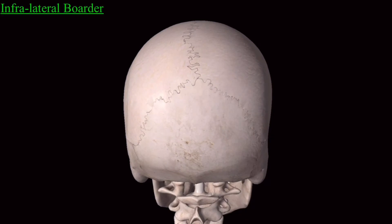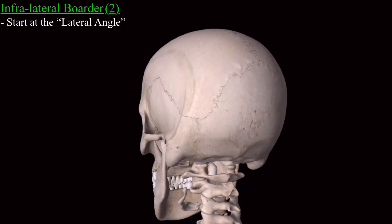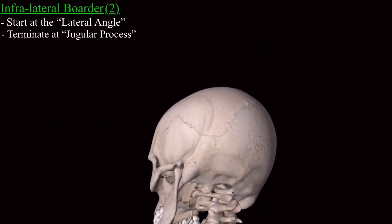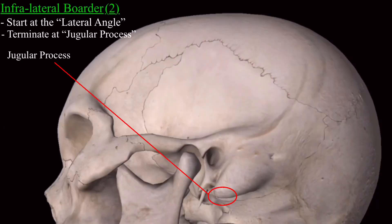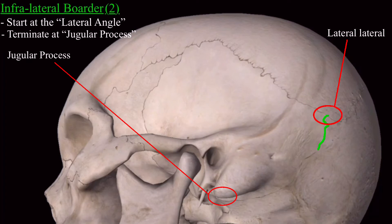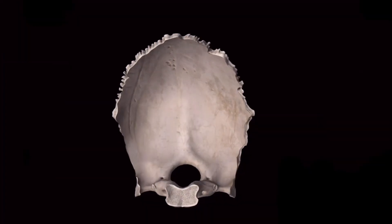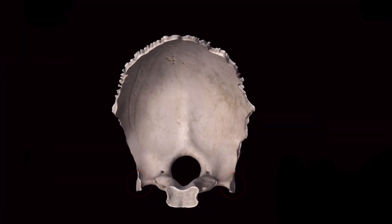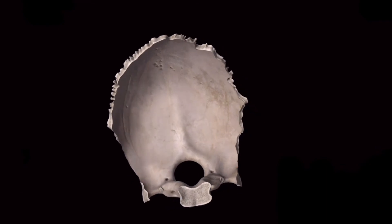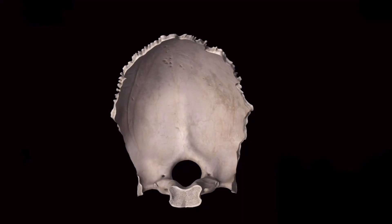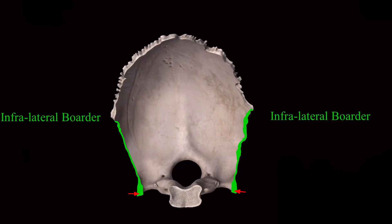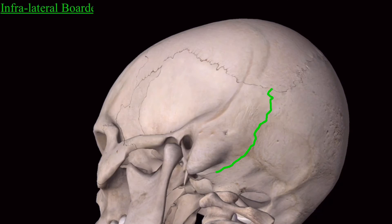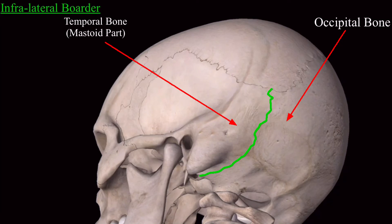Next is the infralateral border, which is also two in number. It starts from the lateral angle to the jugular process. This infralateral border connects the occipital bone to the mastoid part of the temporal bone.